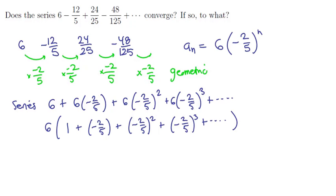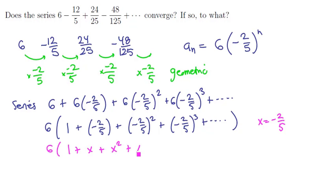Rather than adding up individual terms and trying to make an approximation, let's compare this to a series we already know using the heredity principle. To make it more obvious, let the variable x denote negative two-fifths. Our series then takes the form 6 times the quantity 1 plus x, plus x squared, plus x cubed, plus x to the fourth, and so on. This expression is the geometric series.